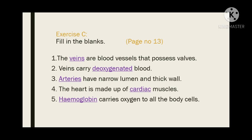Number 3. Blank have narrow lumen and thick wall. Answer: Arteries. Number 4. The heart is made up of blank muscles. Answer: Cardiac. Number 5. Blank carries oxygen to all the body cells. Answer: Hemoglobin.